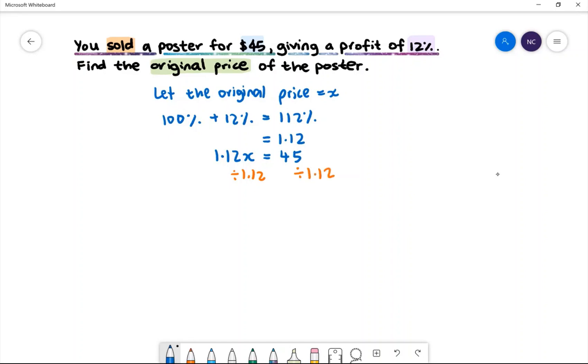We will then get x equals 45 divided by 1.12. Therefore, x equals $40.18. Therefore, the original price of the poster is $40.18.